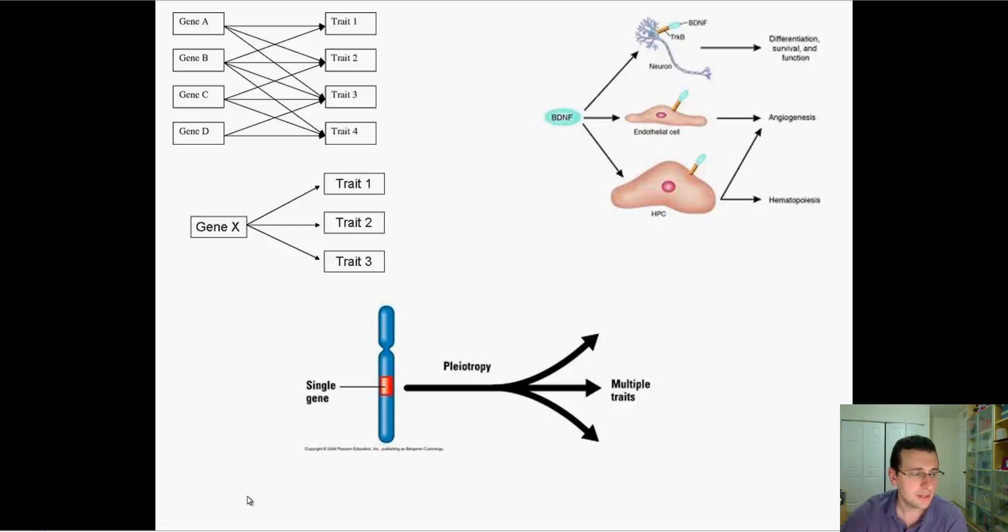So a single gene with multiple traits is pleiotropy, which is this word right here, pleiotropy. It's like a gene is playing, it's doing too much.